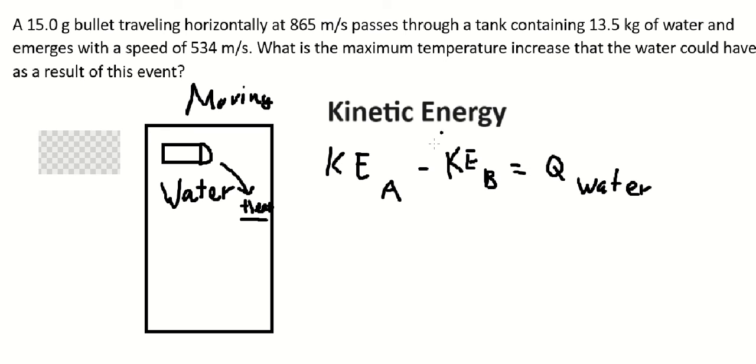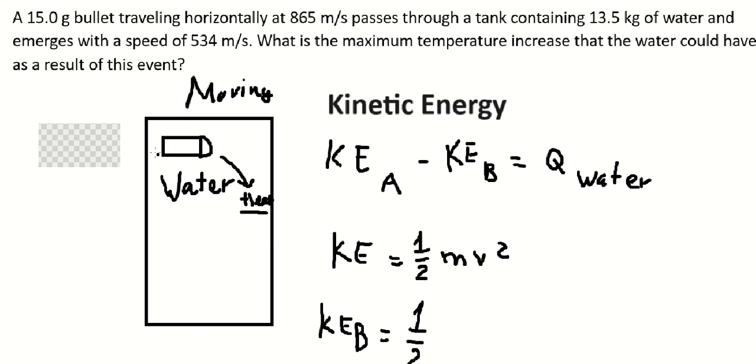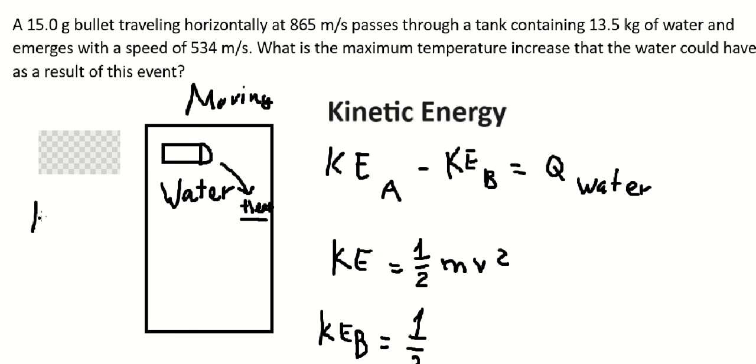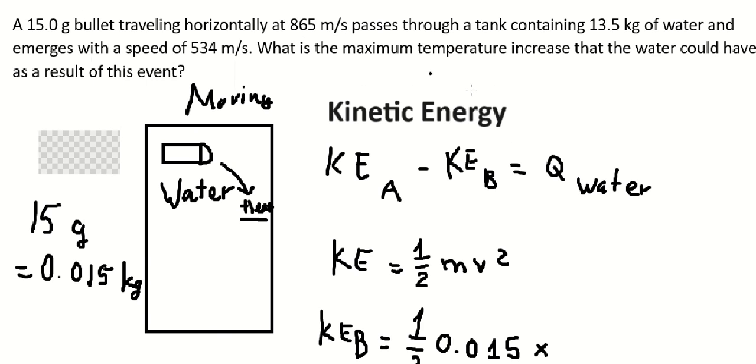The formula is KE = ½mv². Before, the mass is 15 grams, so we need to convert into 0.015 kilograms. We put this number here. The velocity is 865 m/s.